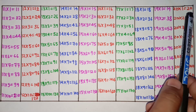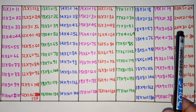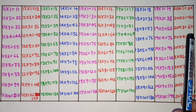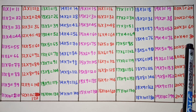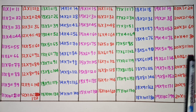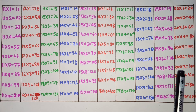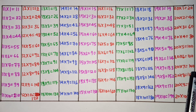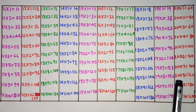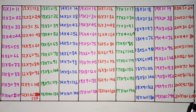20×1 is 20, 20×2 is 40, 20×3 is 60, 20×4 is 80, 20×5 is 100, 20×6 is 120, 20×7 is 140, 20×8 is 160, 20×9 is 180, 20×10 is 200.